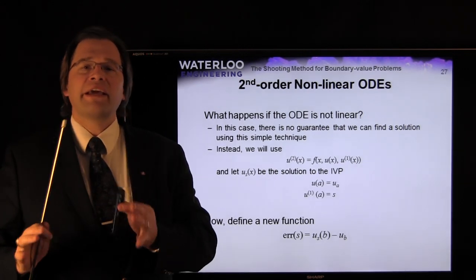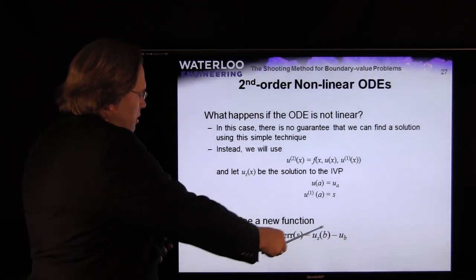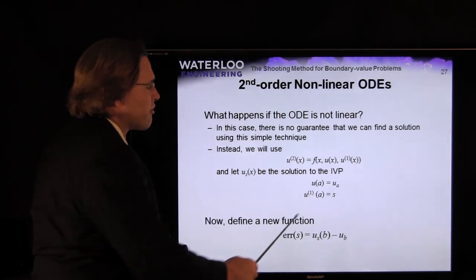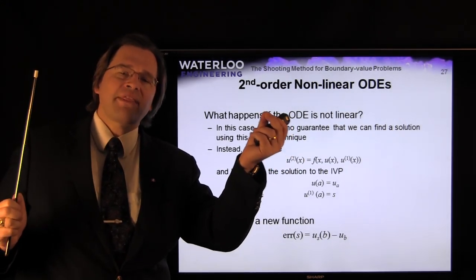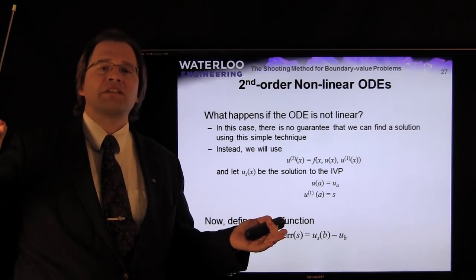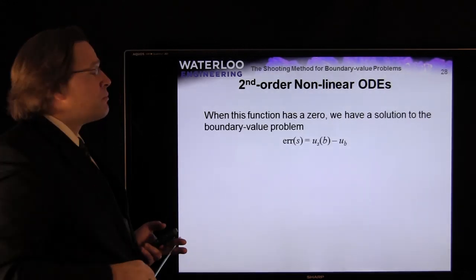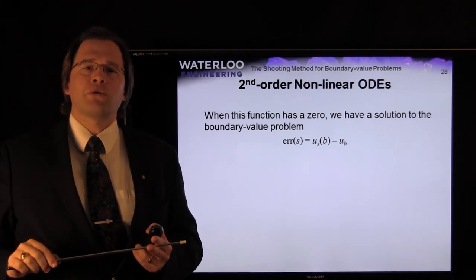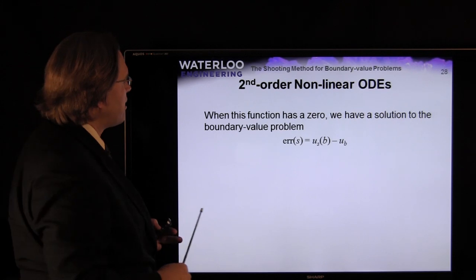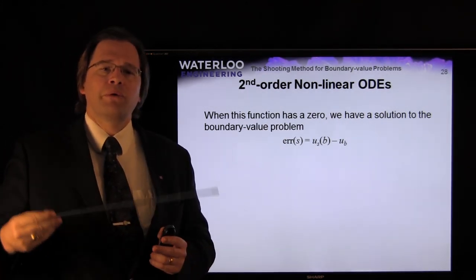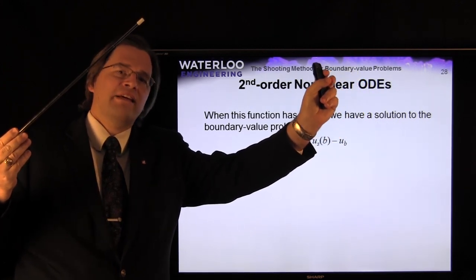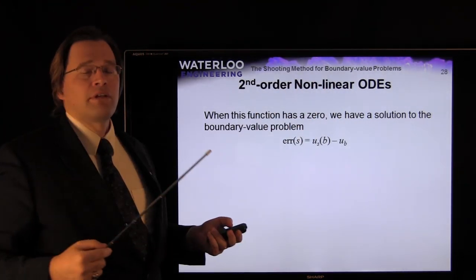u_s defines a class of solutions parameterized by the initial slope s. We want to find the specific slope that causes the solution to pass through the second boundary value at x = b. To do this, we define an error function: given slope s, solve the IVP, evaluate at x = b, and subtract the right-hand boundary value. Finding a root of this error function gives us the desired initial slope. This is a root-finding problem.